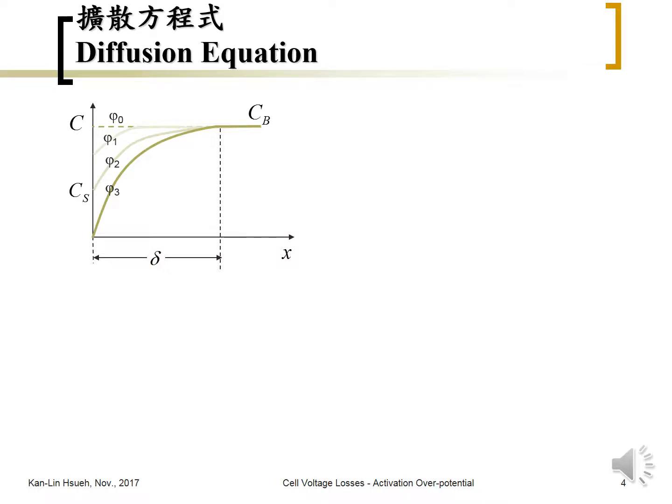The thickness of the diffusion layer depends on the situation. It might be in the millimeter range, or even centimeter range in a porous medium. In an agitated liquid solution, the diffusion length might be around a millimeter or a little less.